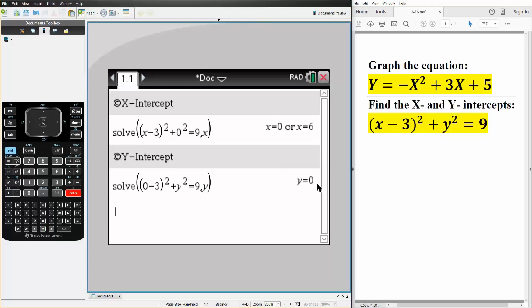And the y intercept is y equals zero. And so that's all we need to do to get the x and y intercepts.